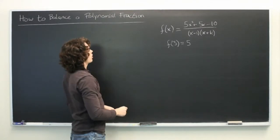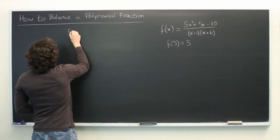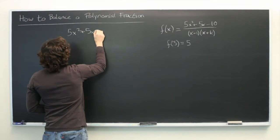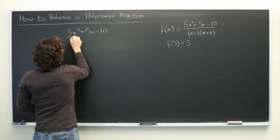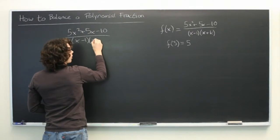So let's try to simplify f(x) a little bit. We have 5x squared plus 5x minus 10 over (x minus 1) times (x plus k).